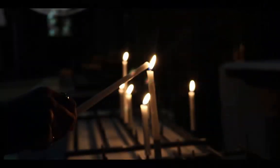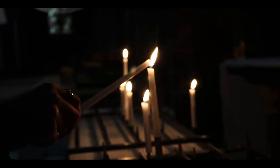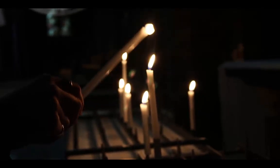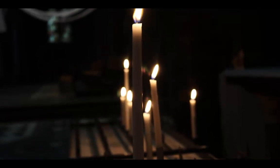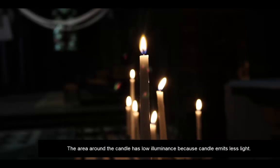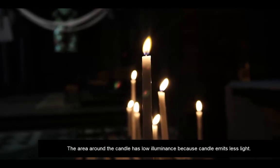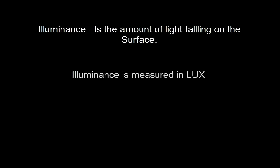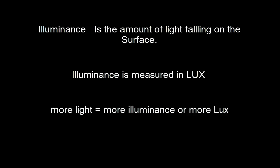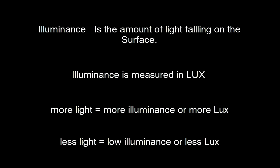Now consider another example of a candle light. The surroundings where the candle is kept will receive a very small amount of light emitted from it — that means the illuminance level or lux levels here are very less. To summarize: illuminance is the amount of light falling on a surface, measured in lux. More light means higher illuminance or higher lux levels; lower light means lesser illuminance or less lux levels.